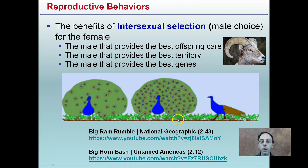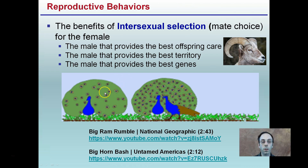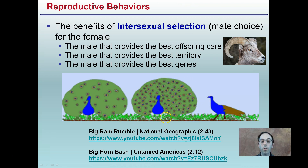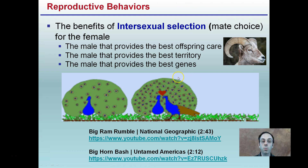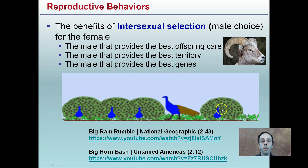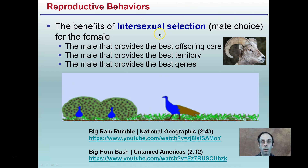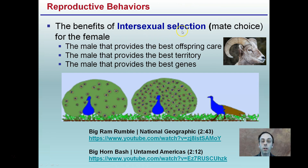Focusing on intersexual selection or mate choice for the female: the female is ideally looking for a male that provides the best offspring care, the best territory, or the best genes. Here we see two individuals with different amounts of showiness to their feathers. This male has showier feathers, the female selects him as a mate, and the resulting population shows an increase in the showiness of their feathers.